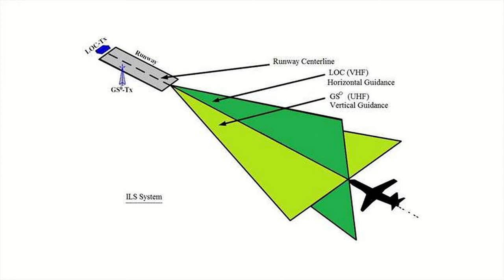The localizer guides left and right. The glide slope provides vertical guidance — that means whether the plane is too high or too low. The ILS system emits two waves: vertical and horizontal radio waves, which cross to form a plus sign.